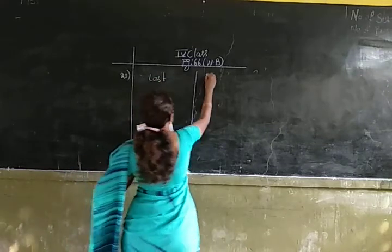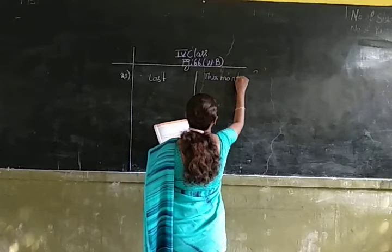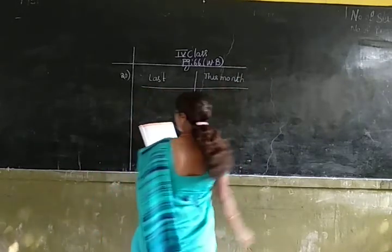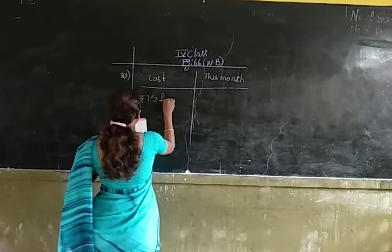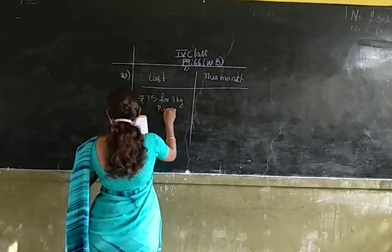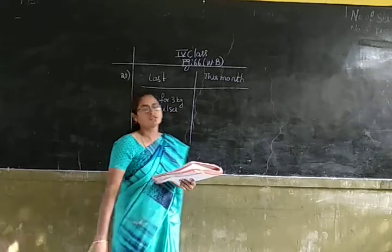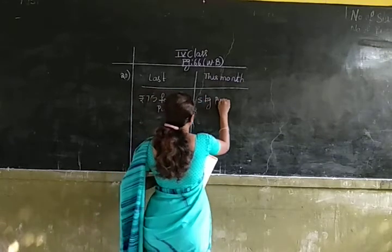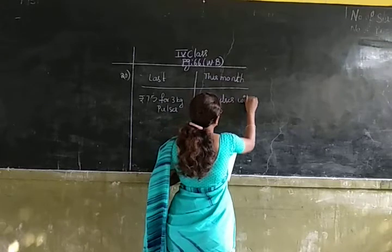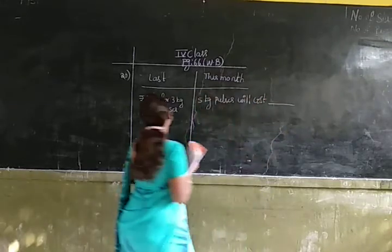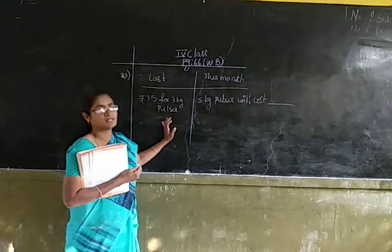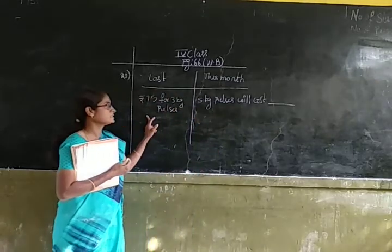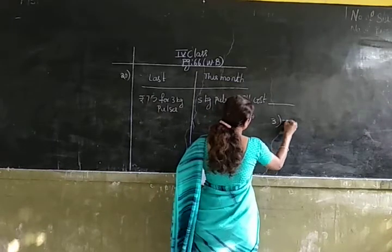From the prices given last month, we have to find out the amount she has to pay this month. She paid Rs. 75 for 3 kg of pulses. Now we have to find out how much she has to pay for 5 kg of pulses. The cost of 1 kg of pulses is found by division. Let us divide 75 by 3.